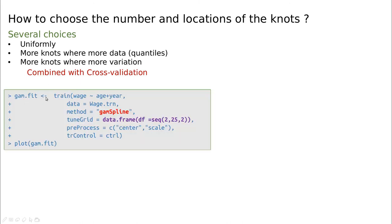So in caret, the syntax is very simple. We are going to use train. The method is going to be GAM spline. And we're going to use a grid changing the degrees of freedom. Remember, degrees of freedom is not related to the degree of the polynomial. In this case, we are going to use, in all cases, the default value, which is cubic spline.